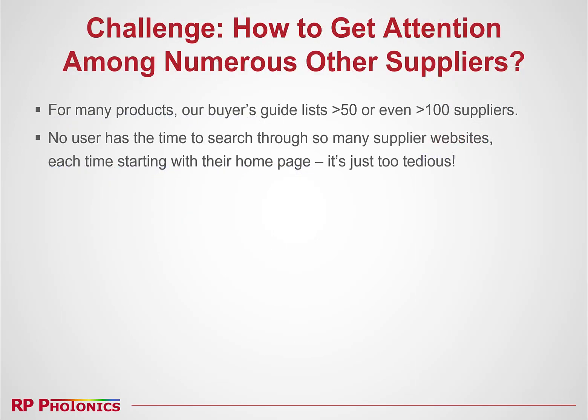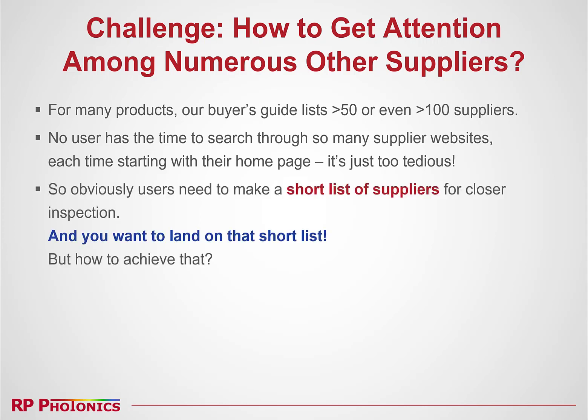You may think the challenge is how to get attention among so many suppliers. For many products, after all, our buyer's guide lists over 50 or even more than 100 suppliers. No user has the time or patience to search through so many supplier websites, each time starting with their homepage — it's just too tedious. So obviously, users first need to make a shortlist of suppliers. Only those will then get a closer inspection. And you obviously want to land on that shortlist. But how to achieve that? I will show you.